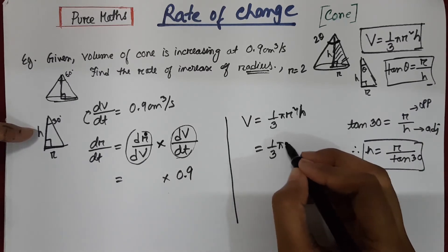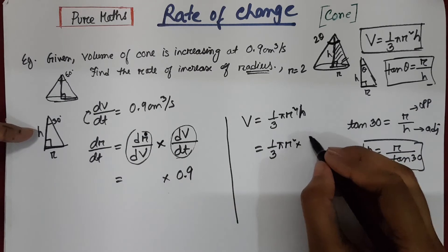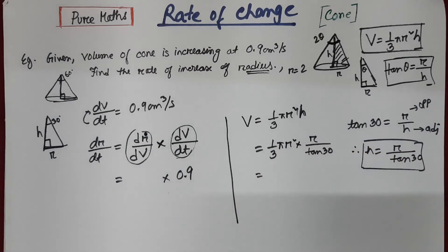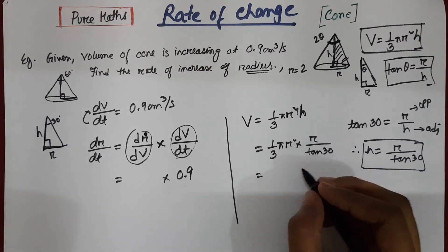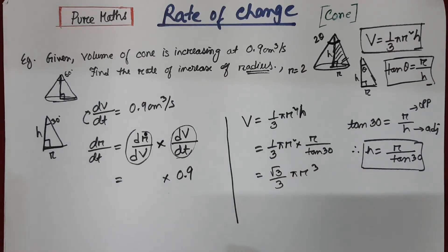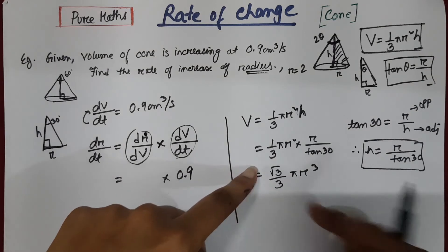So I am replacing h with radius by tan 30. So 3 into tan 30, 1 divided by that. So this will be root 3 by 3 pi r cube. So this is your new equation of volume in terms of radius only.